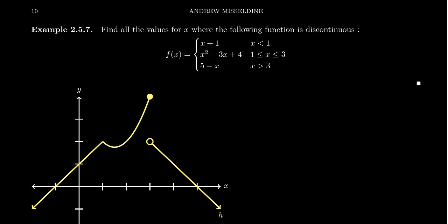By example, consider the function f of x as illustrated here. It's going to be x plus 1 when x is less than 1, it'll be x squared minus 3x plus 4 when x is between 1 and 3 inclusive, and it'll be 5 minus x when x is greater than 3.